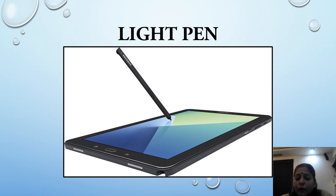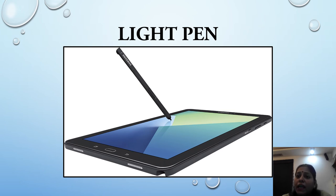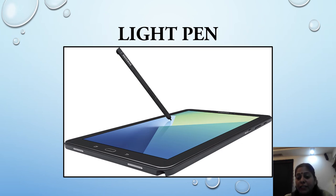The fifth input device is light pen. A light pen is a computer input device in the form of a light-sensitive wand used in conjunction with the computer's CRT monitor. It allows the user to point to display objects or draw on the screen. It is mainly used by engineers, fashion designers, and architects.